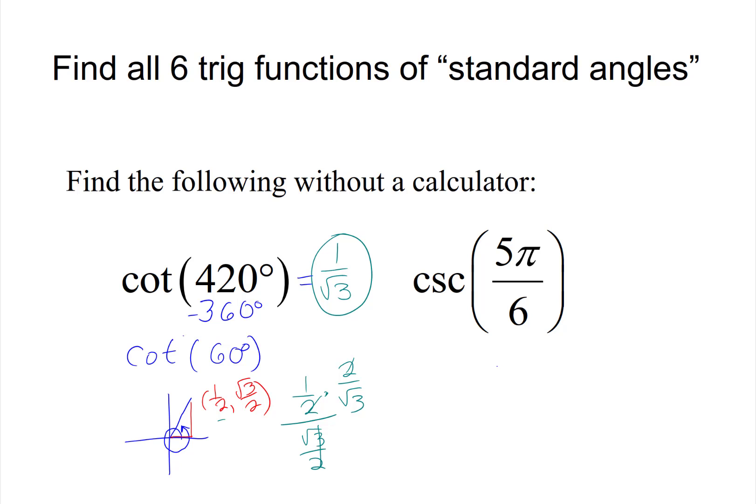Alright, for cosecant we have 5π/6. So as I think about where 5π/6 is, it's over here in quadrant 2. My unit circle values, we've got larger x, smaller y, except that x's are negative, so that'd be -√3/2 and 1/2.